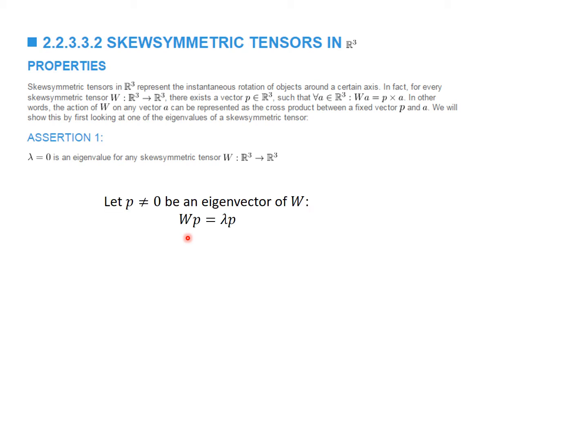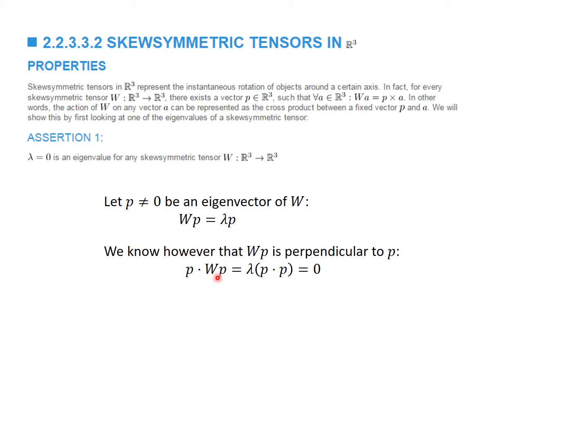We're going to assume that the eigenvector is P, which is of course not a zero vector, so WP equals lambda P. We also know from the previous result that WP has to be perpendicular to P, so P dot WP equals zero. Since P is the eigenvector, WP equals lambda P, so we get lambda times P dot P. But P dot P is the square of the norm of P, and since P is a non-zero vector, this quantity is strictly positive. Therefore, lambda has to be equal to zero.